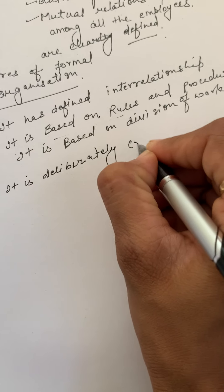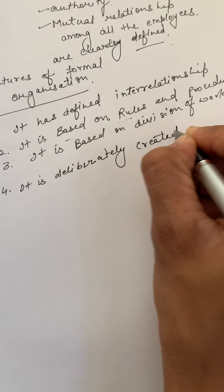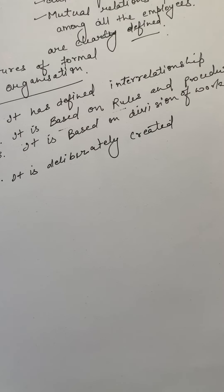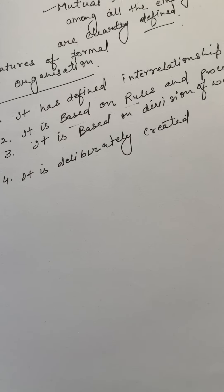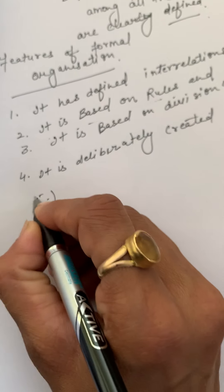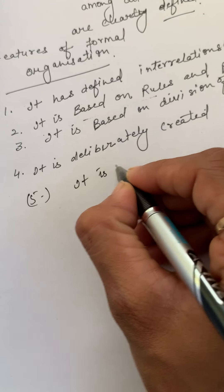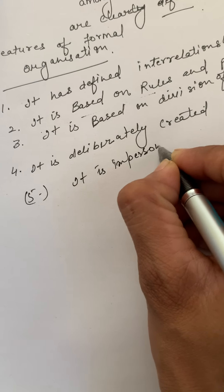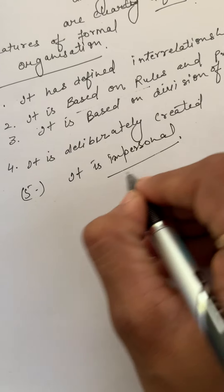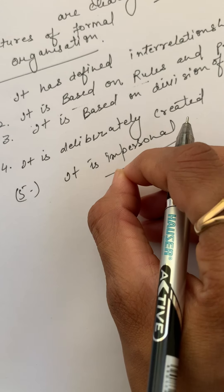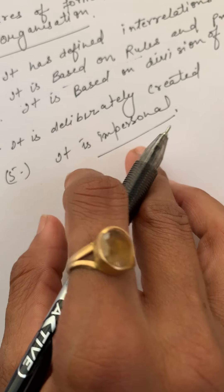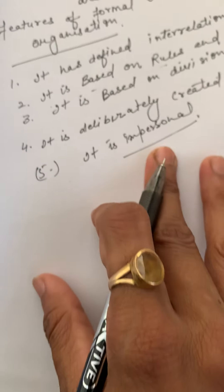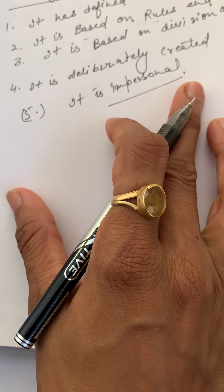Formal organization is deliberately created. It is impersonal - personal feelings are not considered, you have to do the work, so that is why we consider it as impersonal. That is why it is more stable.